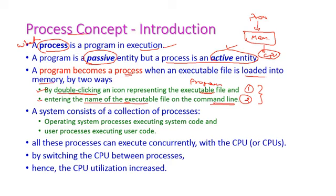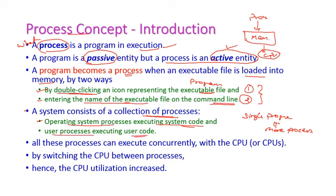By these two ways we can convert the program into a process. The system consists of a collection of processes. A single program may have more than one process. There are two types of processes: operating system processes executing system code, and user processes executing user code. All these processes can execute concurrently with the CPU by switching between them, which increases CPU utilization.